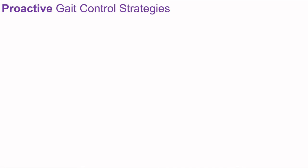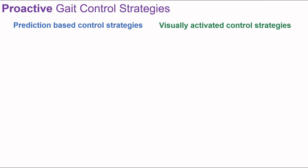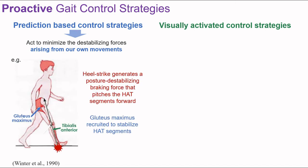When talking about proactive balance, it's useful to distinguish prediction-based and visually activated control strategies. Prediction-based control strategies act to minimize the destabilizing forces arising from our own movements. For example, heel strike generates a posture-destabilizing braking force that pitches the head, arms, and trunk forwards. Looking at muscle recruitment patterns, the gluteus maximus is recruited in anticipation of this perturbation to proactively stabilize the posture of the upper body.